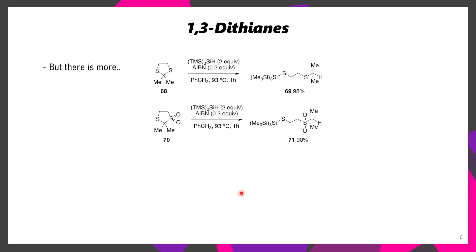In addition to alkyl and aryl halides, it's possible to also ring-open and reduce dithianes using tris(trimethylsilyl)silane. It's also possible to reduce this dithiane S-dioxide, and the hydrogen atom selectively transfers to the center that previously had both of the sulfurs bound. Meanwhile, this ethylthio group ends up forming a radical-trapped product, since the sulfur radical is able to react with the TTMSS radical.